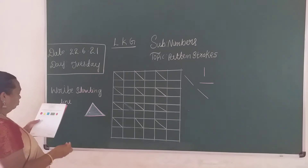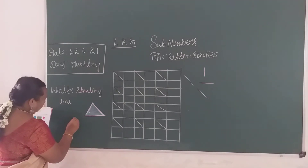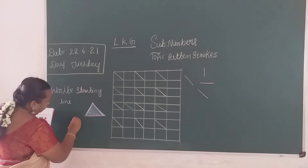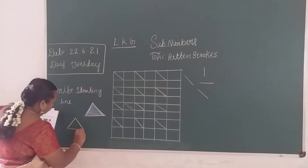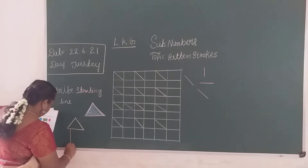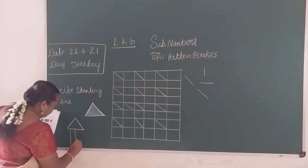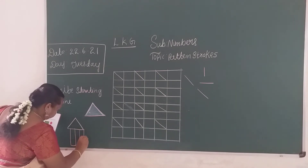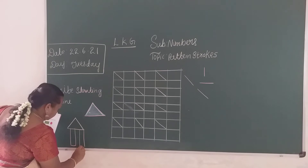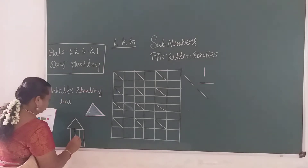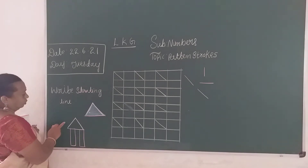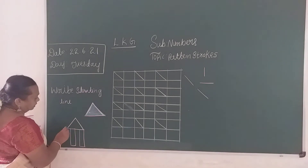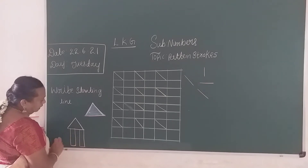Next what we will do? A house. Left slanting line, left slanting line, right slanting line, sleeping line, this standing line, sleeping line, again standing line. What is it children? House. We are using two right and left slanting lines, one sleeping line, two standing lines. Which one will color it?